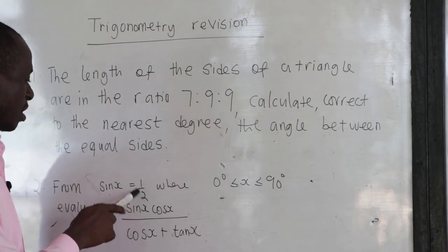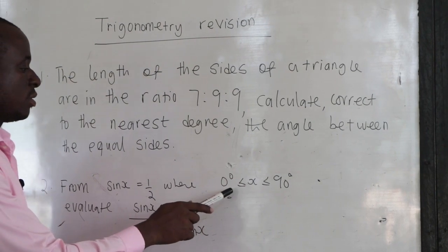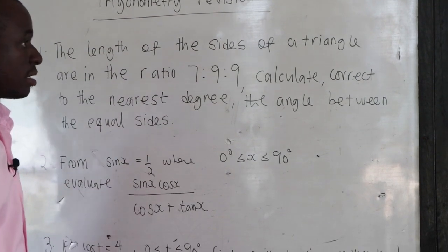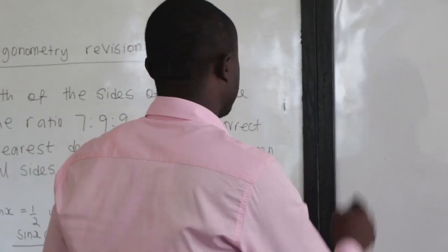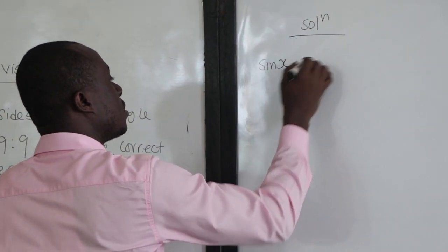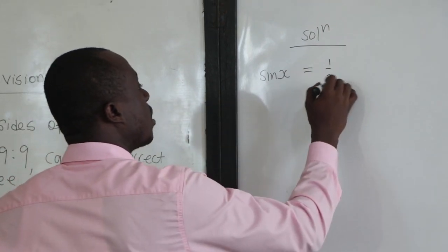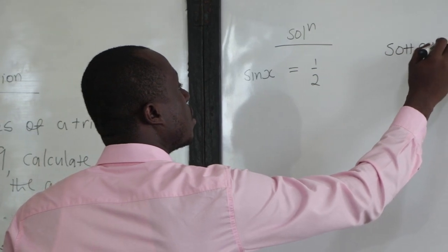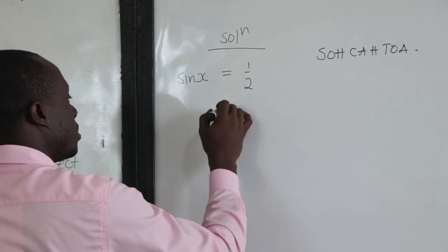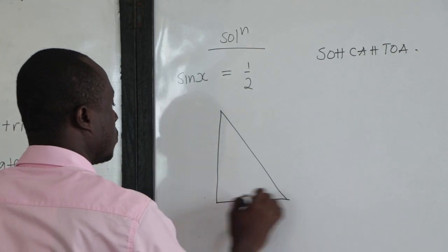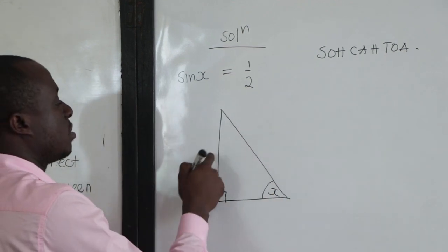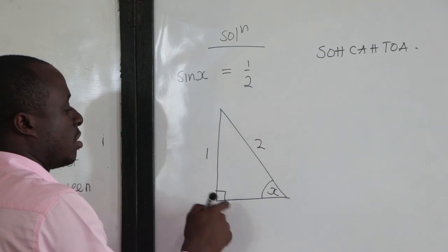Now the second problem says: given that sine x equals one half, where x is between 0 and 90 degrees, find the value of sine x times cos x, all over cos x plus tan x. We're given sine x equals one half. Recall SOH-CAH-TOA: SOH means opposite over hypotenuse. So let's draw a right angle triangle with this 90 degrees, and angle x. The opposite is 1 and the hypotenuse is 2. We don't know the adjacent, so let's call it a.